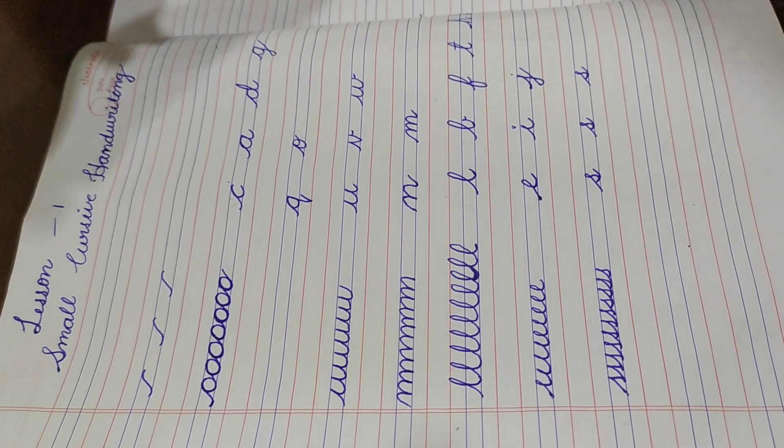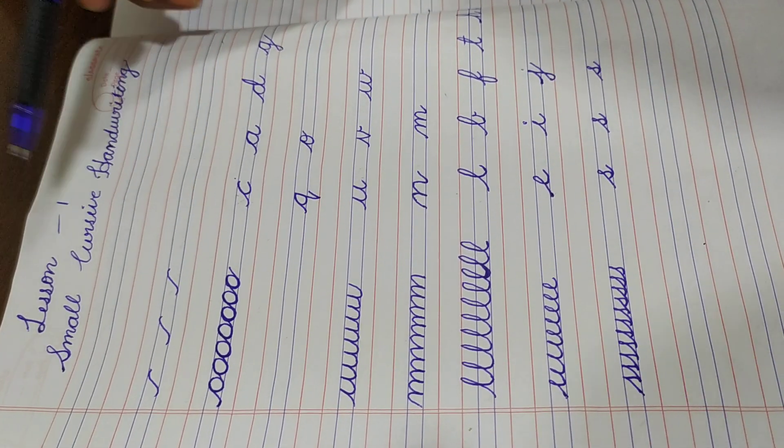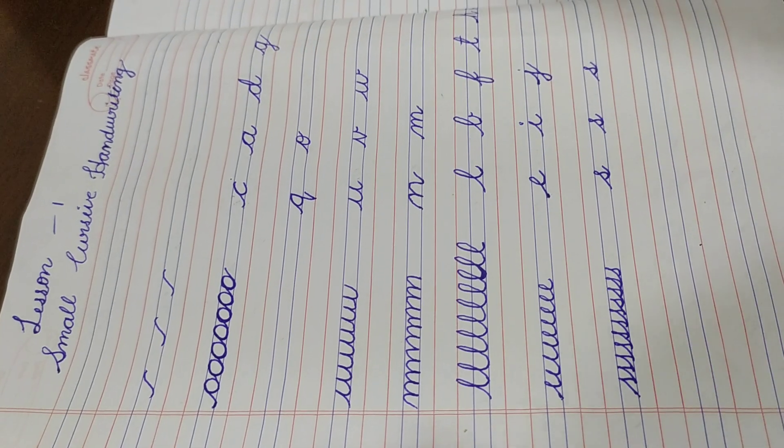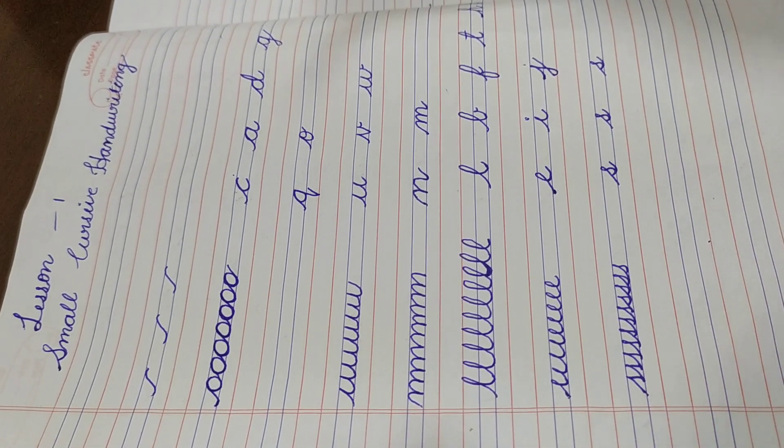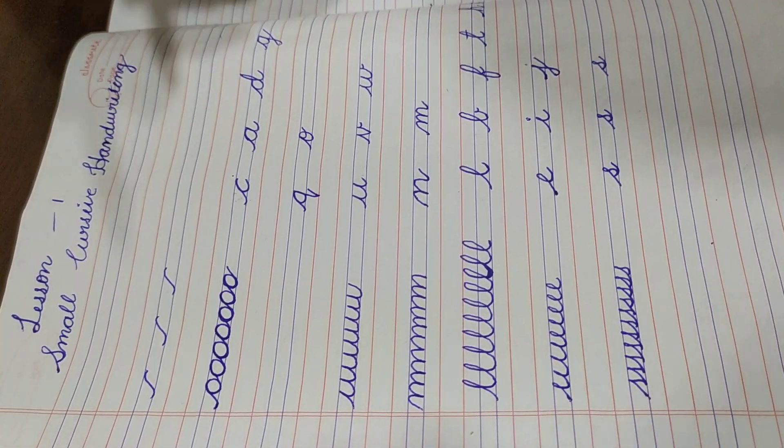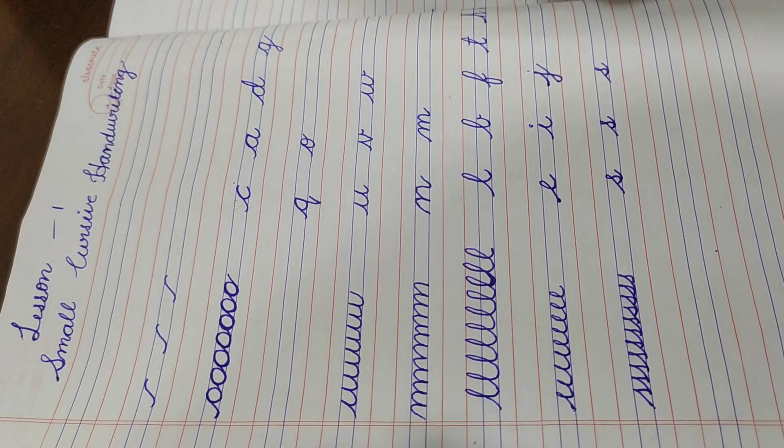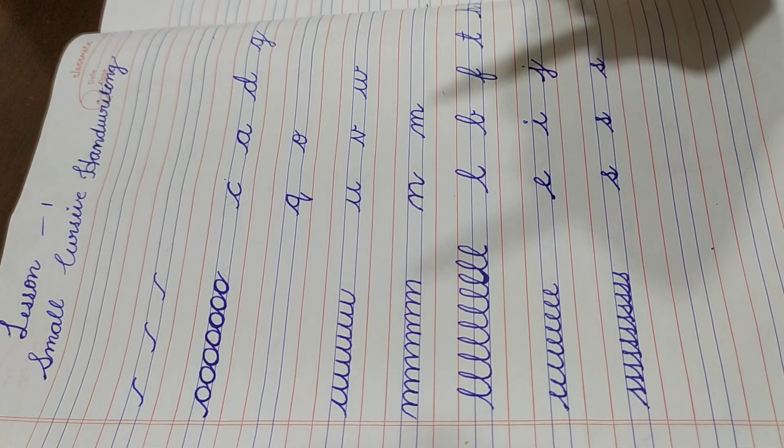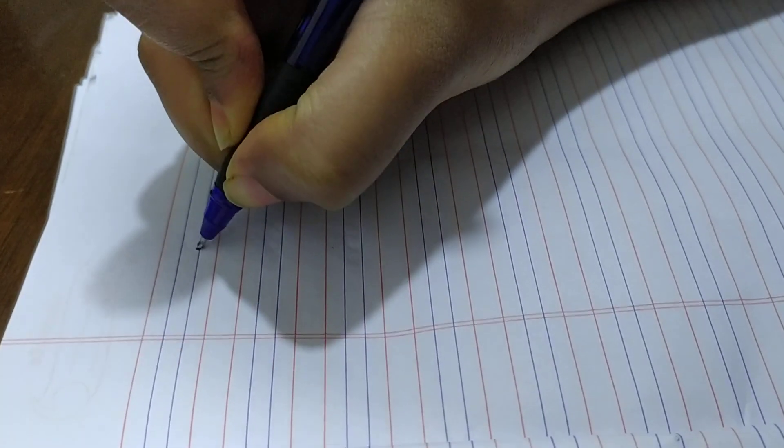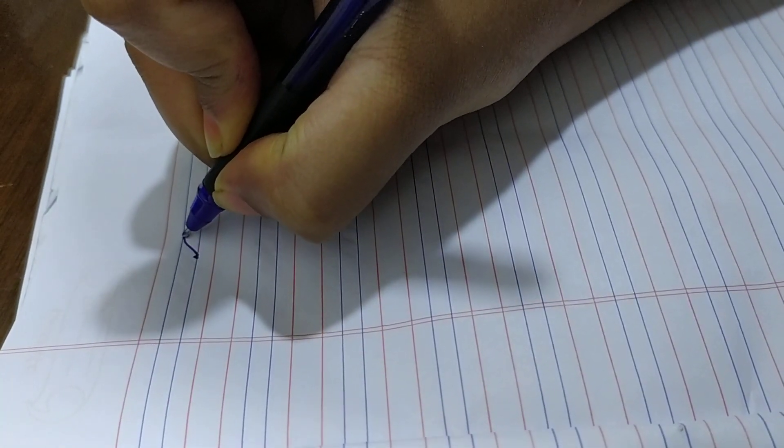Hello all, so today we are going to learn small cursive writing. As I have mentioned in my previous video, how to draw c, a, and d from the stroke. We will revise our previous session as well. Let's start with the stroke. Make a dot and draw a stroke like this.